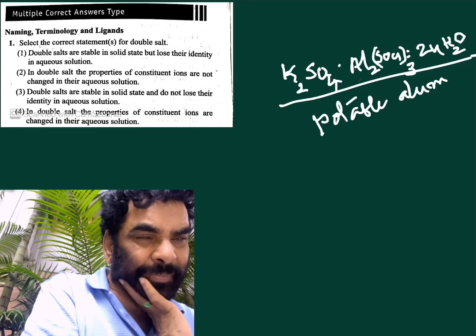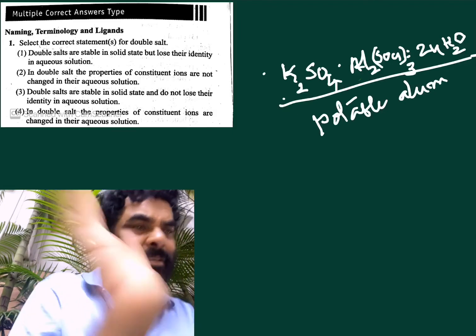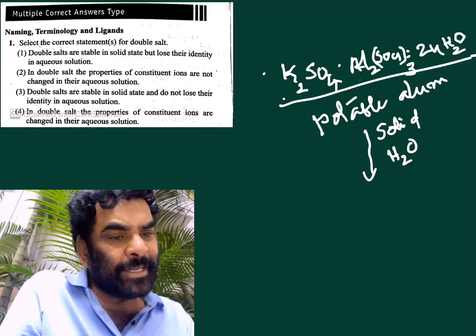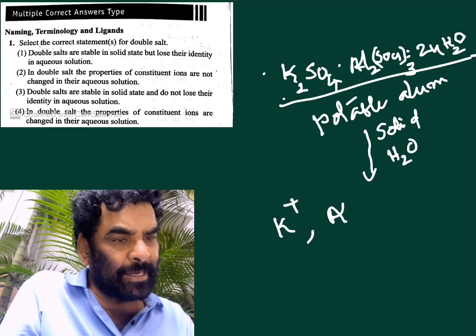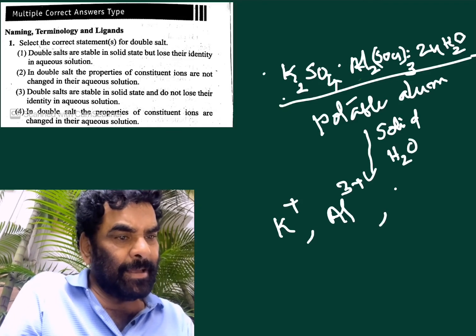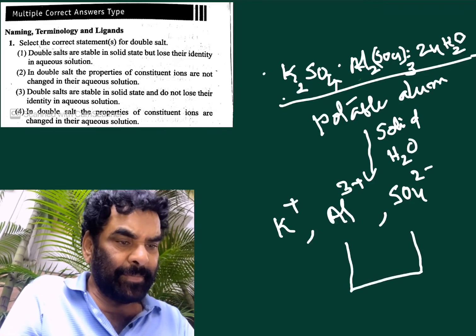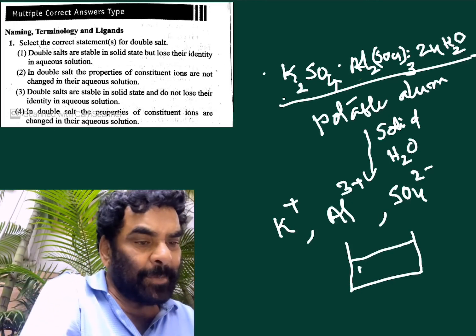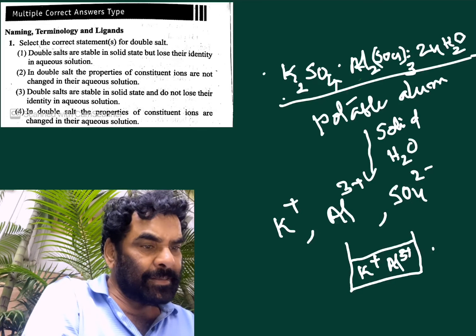Double salts are stable in the solid state and they lose their identity in aqueous solution. When the solid is added to water, the constituent ions dissociate into K⁺ ions, Al³⁺ ions, and sulfate ions in solution.